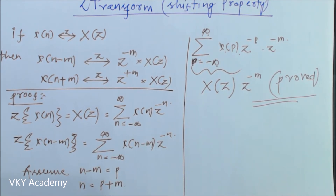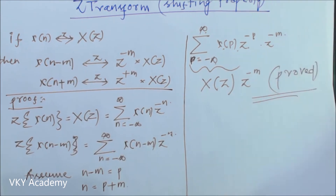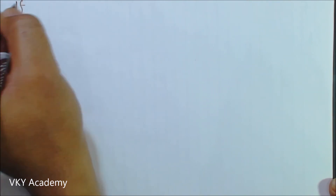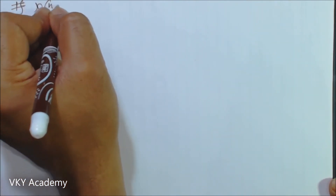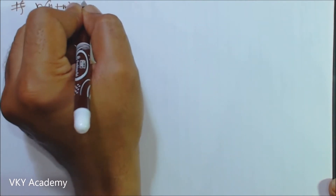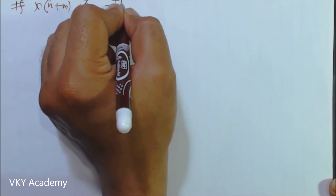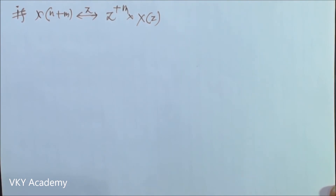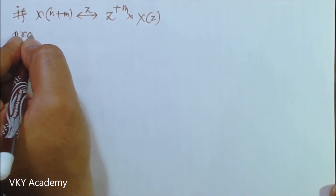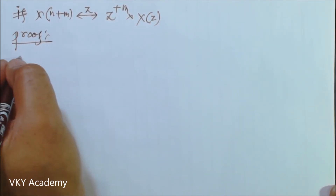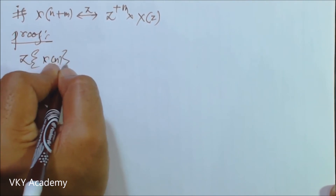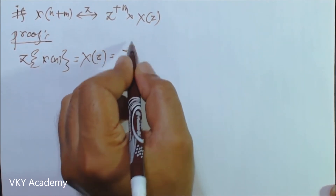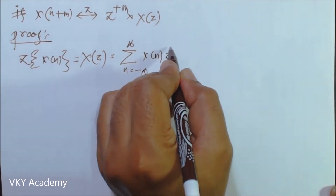In the same way we can prove the second property of shifting. The Z transform will be z to the power plus m into X of z. So let us prove this one. Again, z transform of x of n is equal to X of z, which is summation from n equal to minus infinity to infinity of x of n times z to the power minus n.